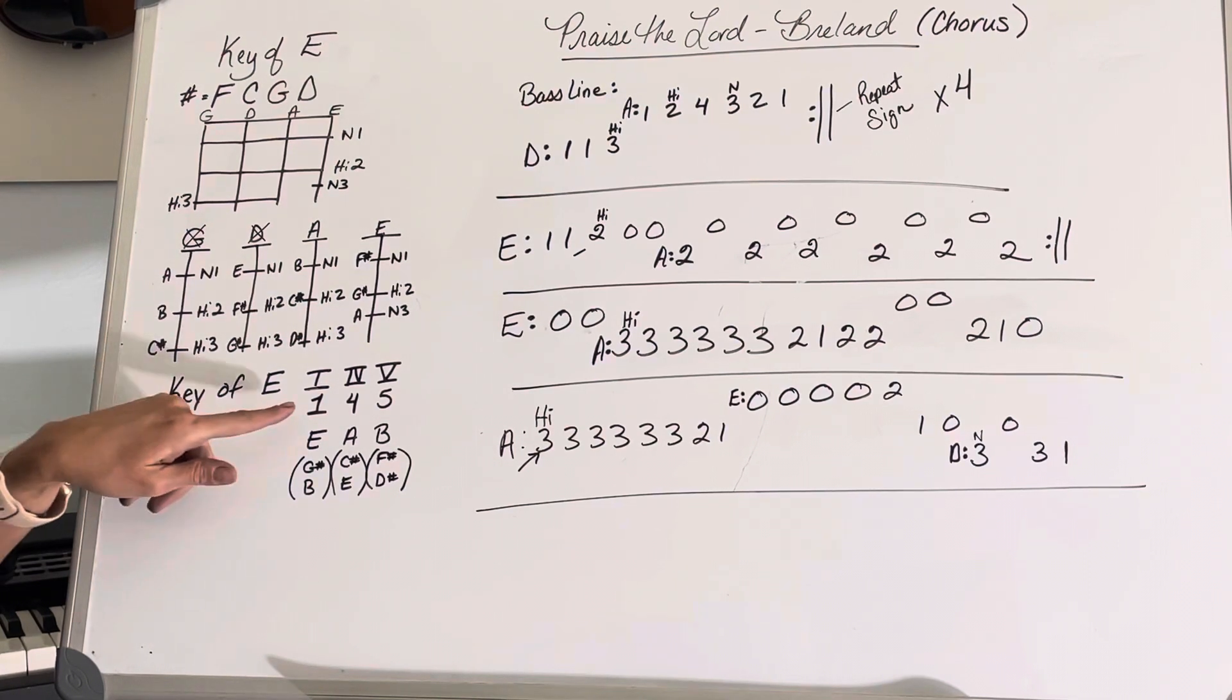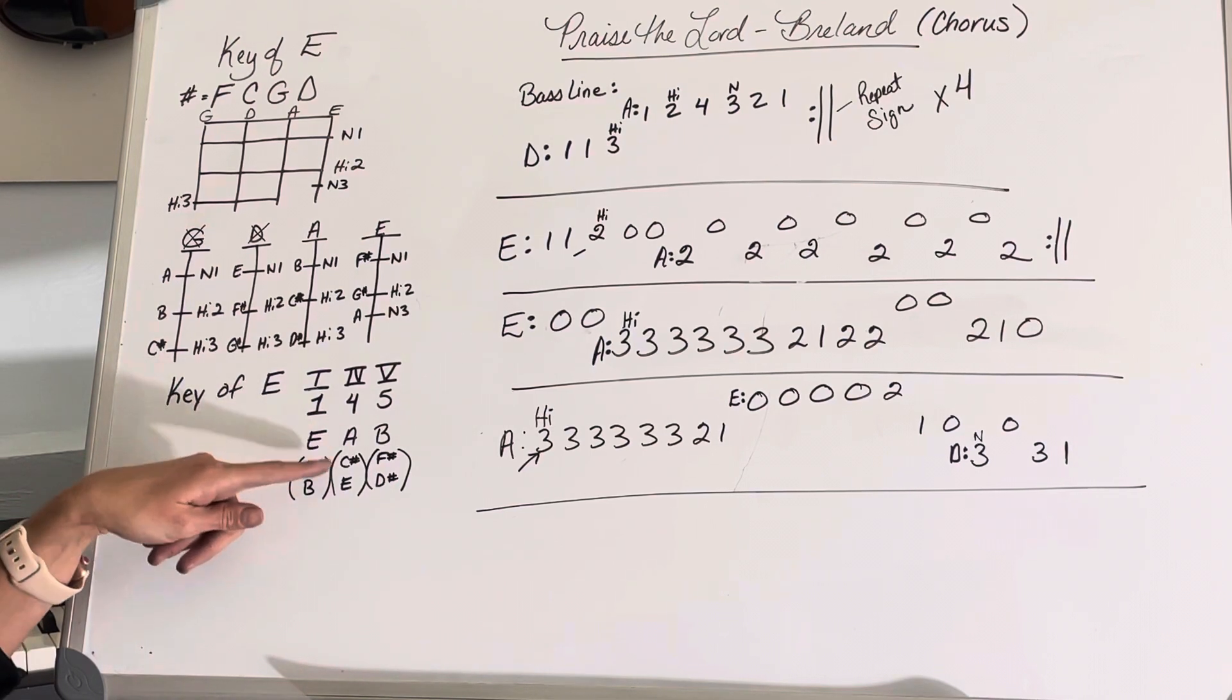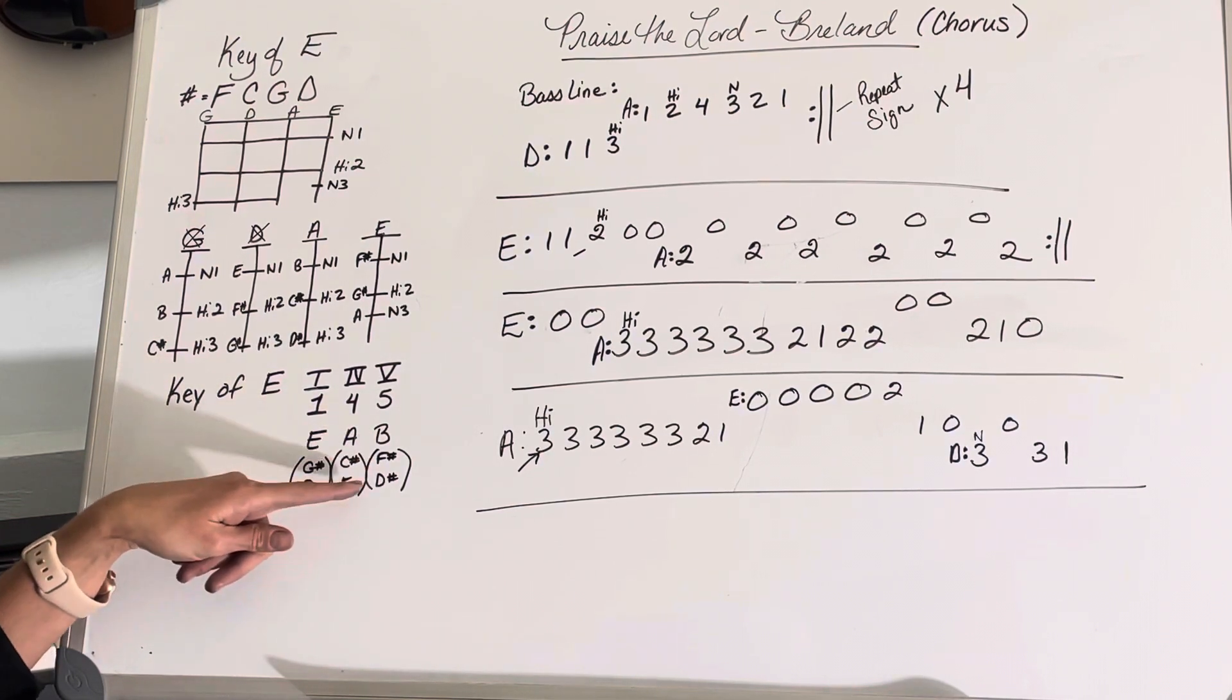And the key of E, our one, four, five chords are E, A, and B. We have E, G sharp, A, A, C sharp, E, and B, F sharp, D sharp.